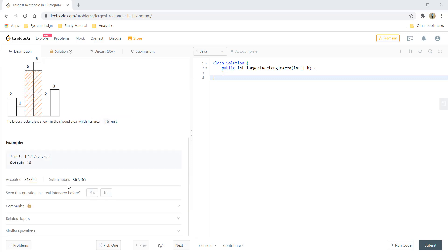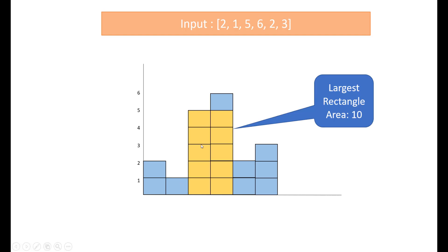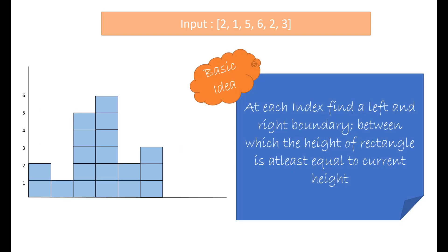Now let's see how we can solve this question. I have plotted the same example in this diagram which says that the first value has height 2, the second has height 1 and so on. Here the maximum area that can be covered is 10 blocks which is 10. The basic idea behind solving this question is that at each index we need to find a left and a right boundary wherein the height of the rectangle is at least equal to the current height.